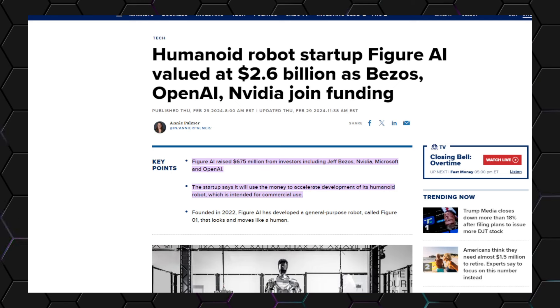To put things into perspective, Figure AI raised $675 million from investors including Jeff Bezos, NVIDIA, Microsoft, and OpenAI. It also says that it will use the money to accelerate the development of its humanoid robot, which is mainly intended for commercial use. And this is exactly what raises my red flags.